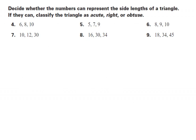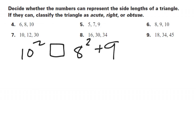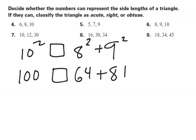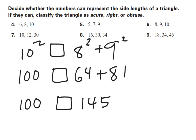Now let's try problem six. In problem six, 10 is the largest value, so that one needs to be C. I'll use 8 for A and 9 for B. Simplifying: 10 squared gives 100, box, 8 squared plus 9 squared gives 64 plus 81, which is 145. So that's a less than symbol, which means the answer to problem six is an acute triangle.